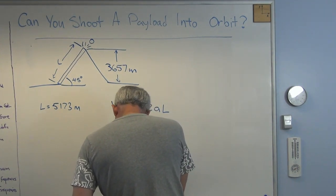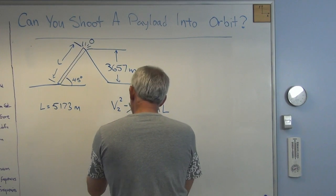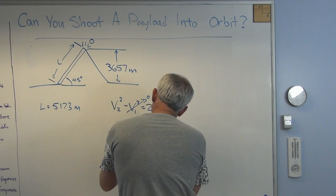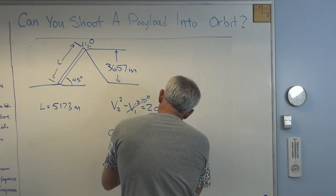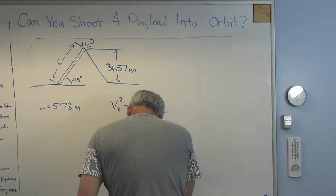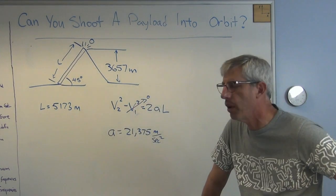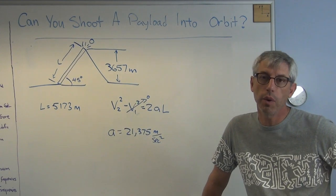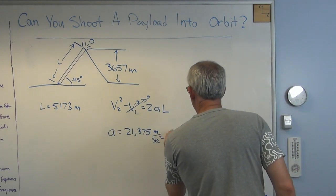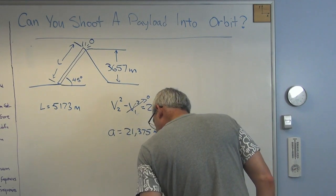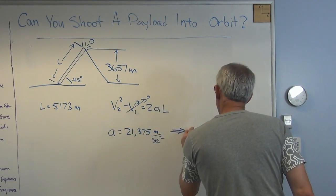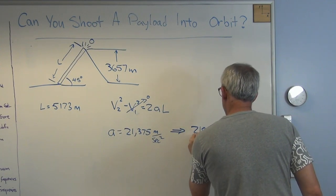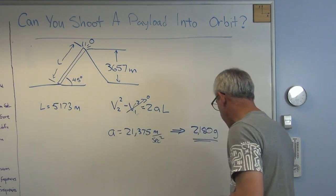The acceleration turns out to be 21,375 meters per second squared. Is that a lot? Well, 1g is 9.81 meters per second squared. That works out to 2,180 g's. 2,180 times the acceleration of gravity.